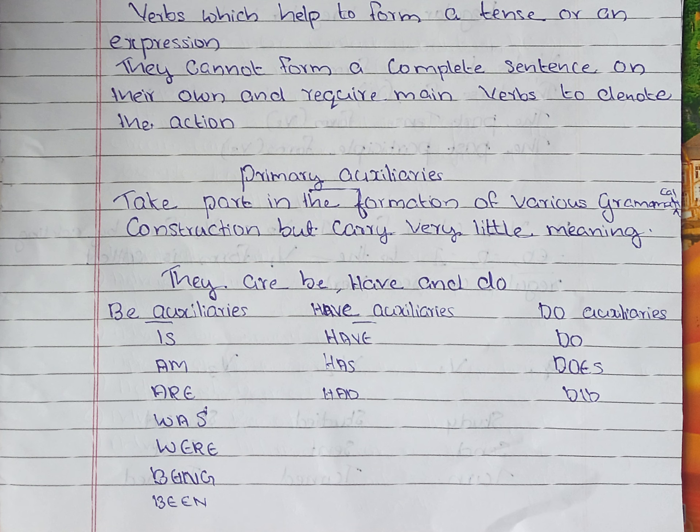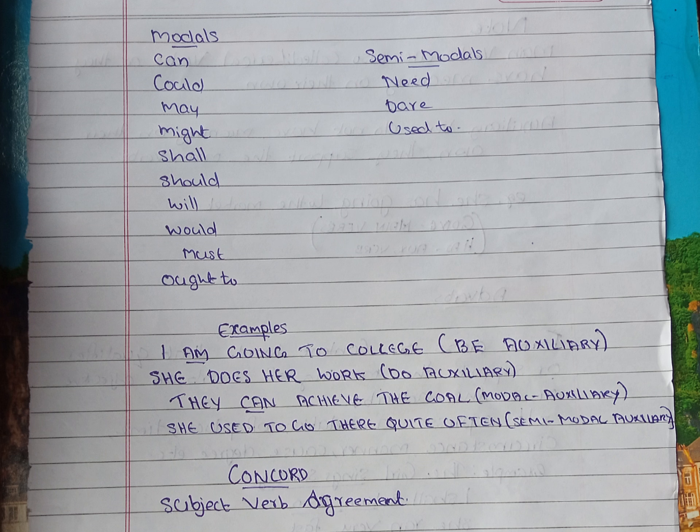Do auxiliary forms are: do, does, did. This is the modal auxiliary. Modal auxiliary verbs are: can, could, may, might, shall, should, will, would, must, ought to.